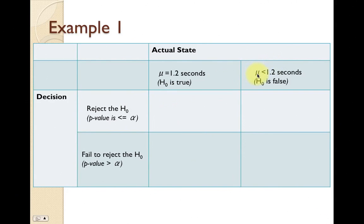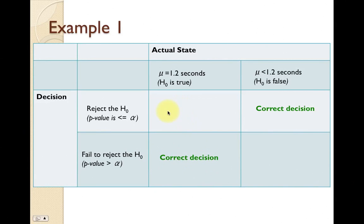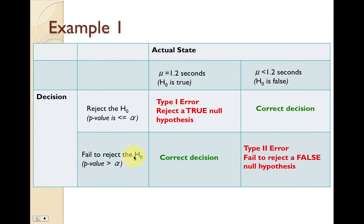The correct decisions are: when the population mean is truly less than 1.2 seconds (null hypothesis false) and we rejected it — correct; and when the null hypothesis is true and we fail to reject it — also correct. The type 1 error occurs when the null hypothesis is true but we incorrectly rejected it. The type 2 error occurs when the null hypothesis is false and we failed to reject it.